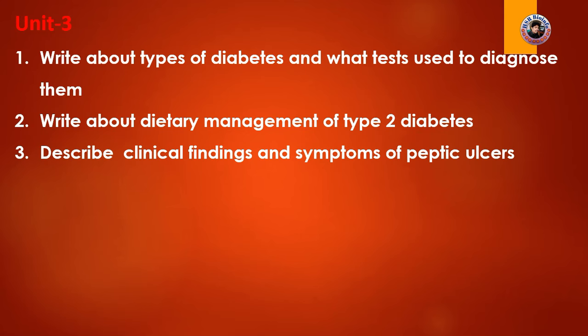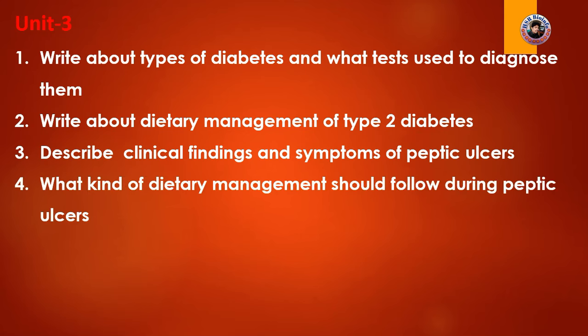The next question is a description of the clinical findings and symptoms of peptic ulcers. In the digestive system, peptic ulcers occur in a specific region. This covers the clinical findings and symptoms of peptic ulcers. Another question asks: what kind of dietary management should be followed during peptic ulcers to maintain health?